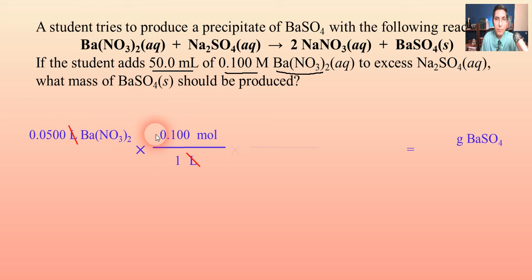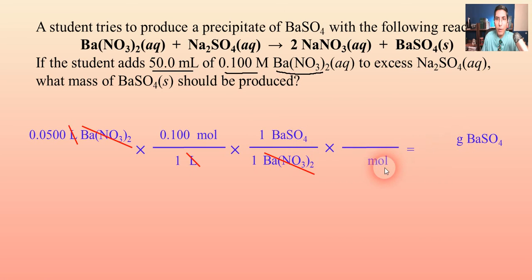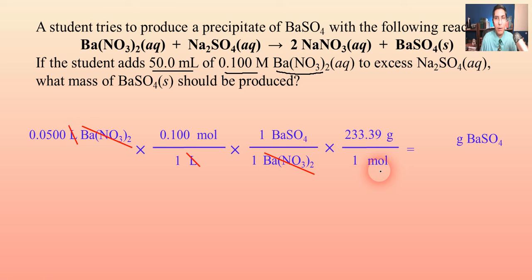Step two is the mole ratio, same as always. We put barium nitrate on the bottom and we're converting to barium sulfate on top. The mole ratio is 1 to 1 in this case. Step three is to convert to the final unit, which is grams. So moles go on the bottom and grams go on top. We add up barium sulfate on the periodic table — one barium, one sulfur, and four oxygens.